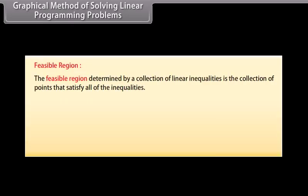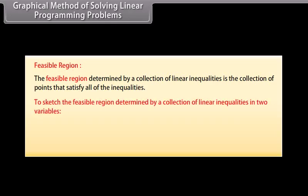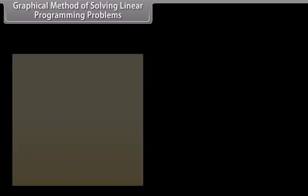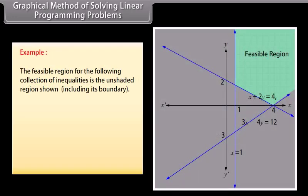Graphical method of solving linear programming problems — Feasible region: the feasible region determined by a collection of linear inequalities is the collection of points that satisfy all the inequalities. To sketch the feasible region, sketch the regions represented by each inequality on the same graph, shading the parts you do not want. What is unshaded when done is the feasible region. Example: the feasible region for 3X − 4Y ≤ 12, X + 2Y ≥ 4, X ≥ 1, Y ≥ 0 is the unshaded region including its boundary.